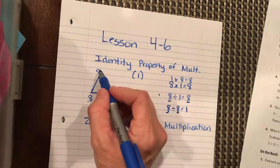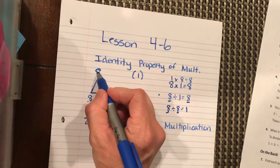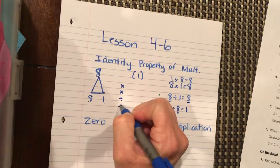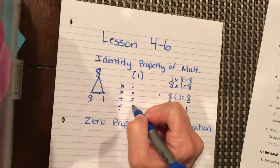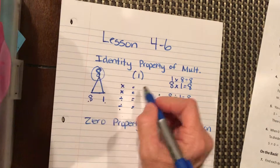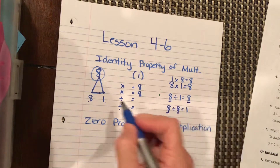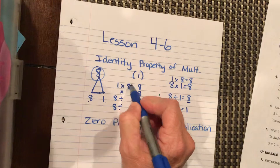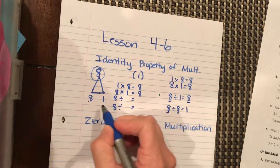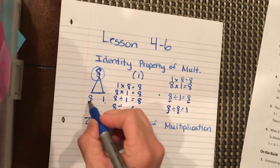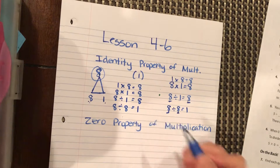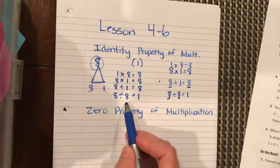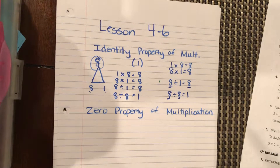In our fact family we have multiplication, multiplication, division, and division. This 8 goes at the end for multiplication and at the beginning for division: 1 times 8 is 8, 8 times 1 is 8, 8 divided by 1 is 8, and 8 divided by 8 is 1. Even though this is a pretty easy concept, it can get confusing and you can end up putting the numbers in the wrong place — you have to pay attention to that.